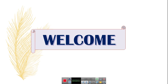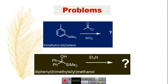Hello everyone, welcome. In this video, I am going to discuss about two problems. The first problem is the reaction of an aryl silane with acid chloride in presence of AlCl3. The second problem is the reaction of trimethyl silane methanol with base. We will determine what kind of products you will get in these two organic transformations.